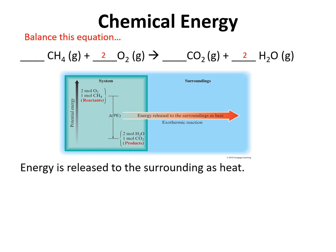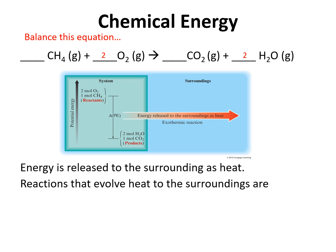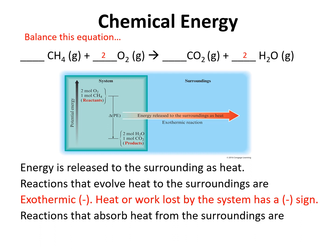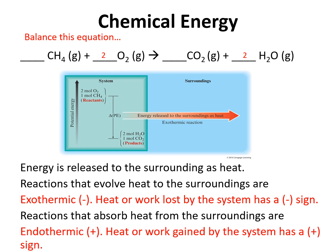A reaction that releases heat to the surroundings is known as an exothermic reaction, and the heat value calculated would have a negative sign, denoting that heat is given off to the surroundings. If a reaction absorbs heat from the surroundings instead, it would be referred to as endothermic — 'endo' meaning inside, the heat is coming into the system — and we would have a Q value with a positive sign.